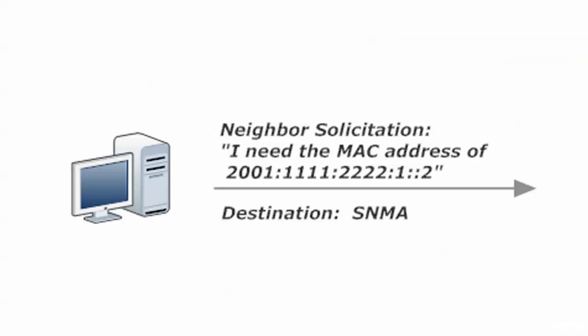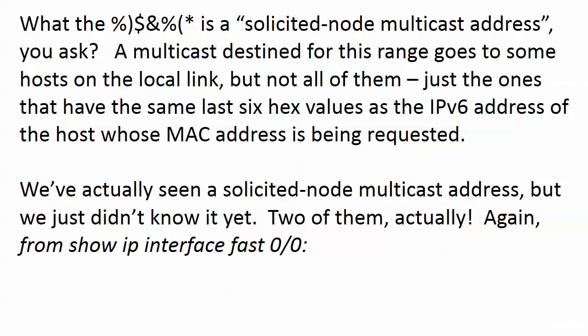What is a solicited node, you ask? Don't feel badly if that was your question, or even if you had a little mild profanity in there, because that was pretty much my reaction the first time I saw it. One thing I want to mention up front before we get into the calculation: the SNMA is used for other purposes besides NDP — a lot of other purposes in IPv6 that you'll run into later. So you just have to go on faith right now that this makes sense.